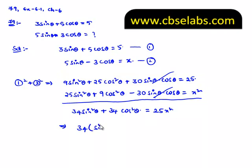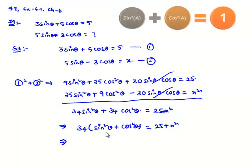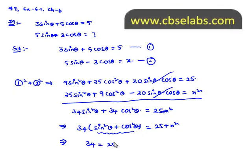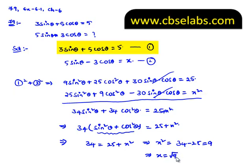Then, taking 34 common on the left hand side, we get 34 × (sin²θ + cos²θ) = 25 + x². Using the identity sin²θ + cos²θ = 1, we get 34 = 25 + x², which implies x² = 34 − 25 = 9, therefore x = ±3.